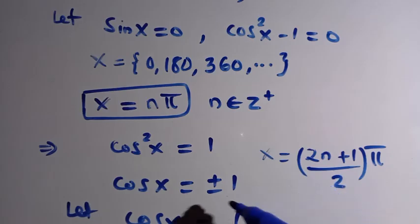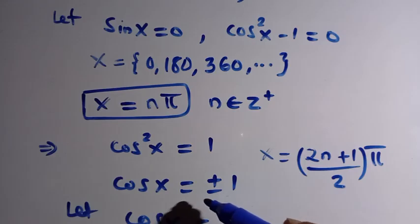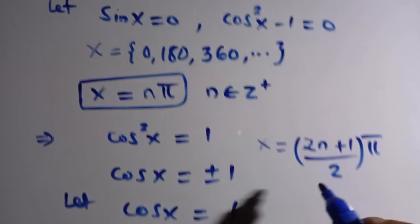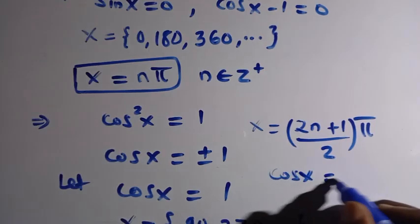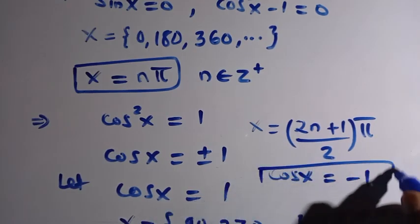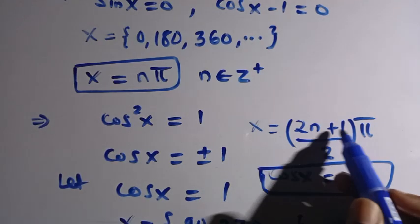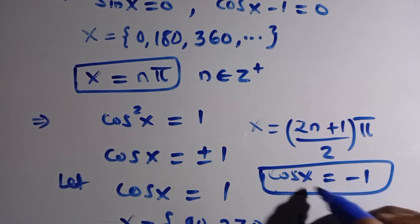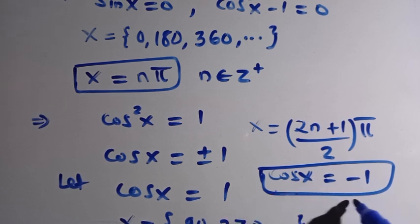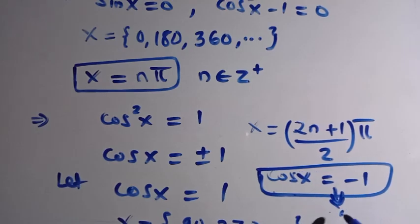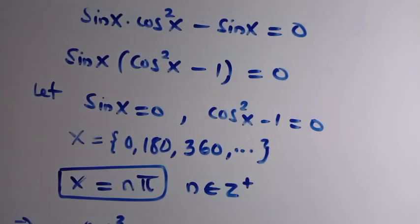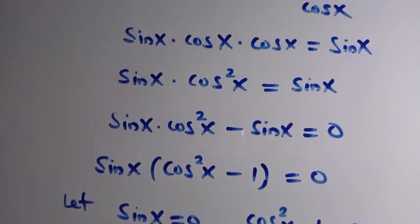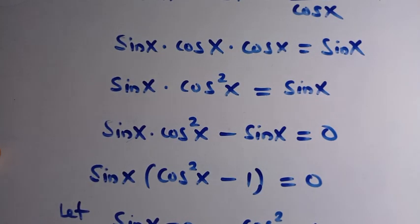For the remaining sub-case where cos x equals negative 1, you can work out the general solution and drop the answer in the comment box. Thanks for watching — this is how we solve this problem. If you have another method, feel free to share it. See you in the next class. Never stop learning; those who stop learning stop living. Bye bye.